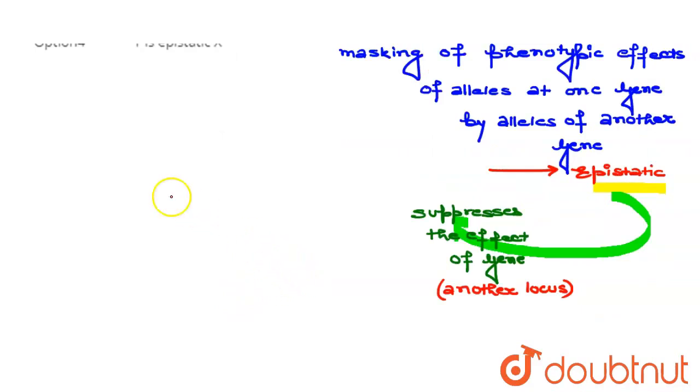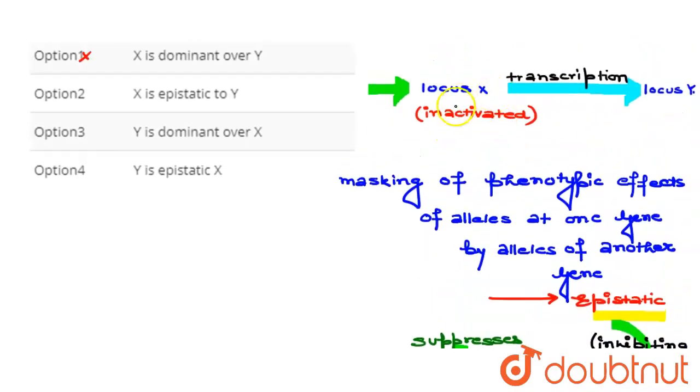then that gene we call epistatic when its presence suppresses the effect of a gene at another locus. Most of the time, epistatic genes are also called inhibiting genes